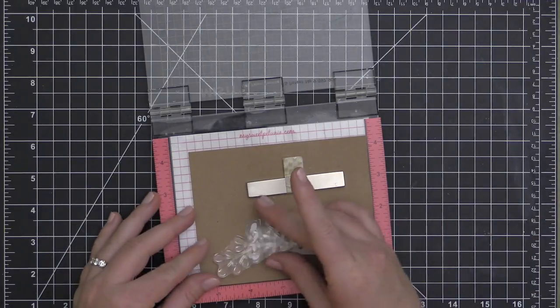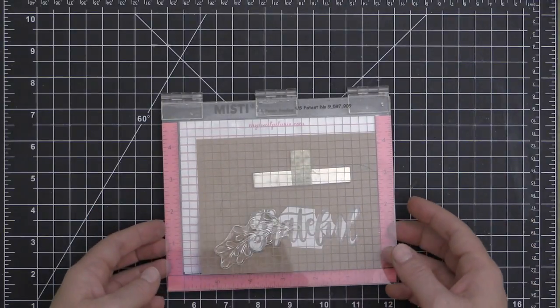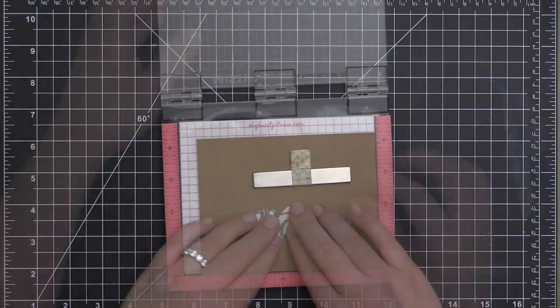Now that I have my sentiment down, I'm going to go ahead and place the mask over the top, and then I'm going to use this vine to stamp over it.